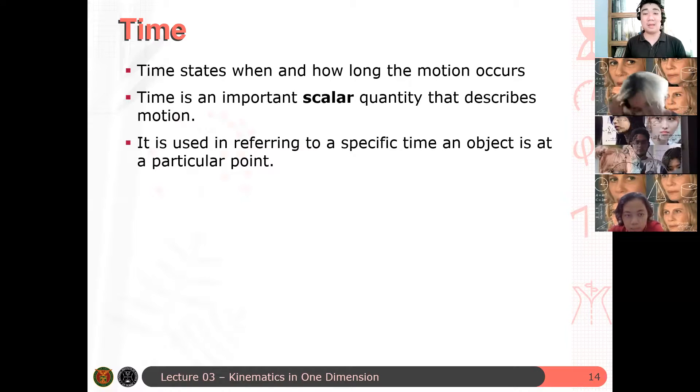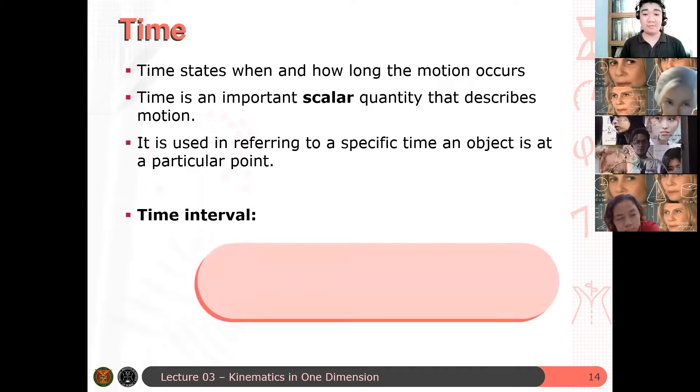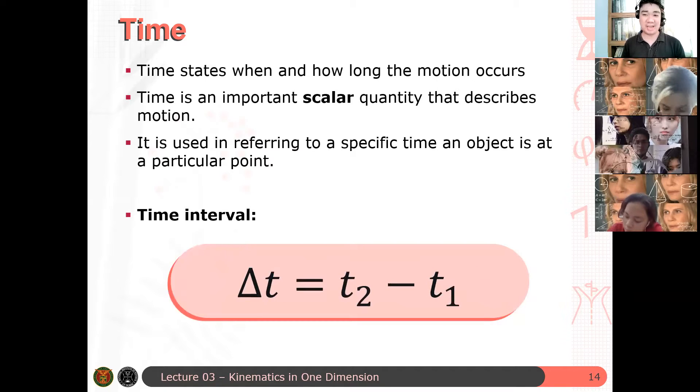So, for example, usually naman sa mga examples natin, the particle is initially at rest. So, at time t equals 0, hindi pa gumagalaw yung particle, then bigla siyang gagalaw once na t equals 0 na. And it's t equals 0, so we set that t equals 0 based on the problem. So, the time interval is defined as, just change in time, t2 minus t1. This is only the thing that's important for us now. So, importante lang sa atin kung kailan nag-start at kailan nag-end yung motion ng isang object. And you can measure it through time, through calculating the time interval, delta t.